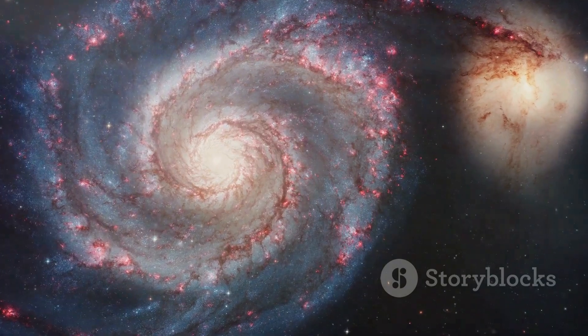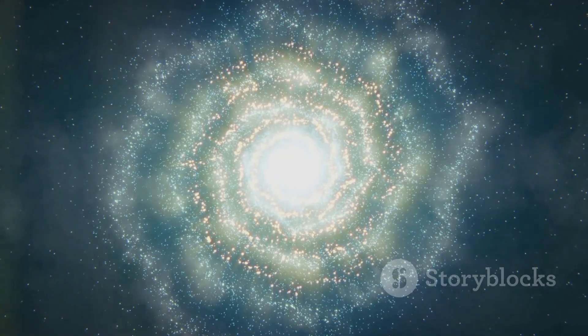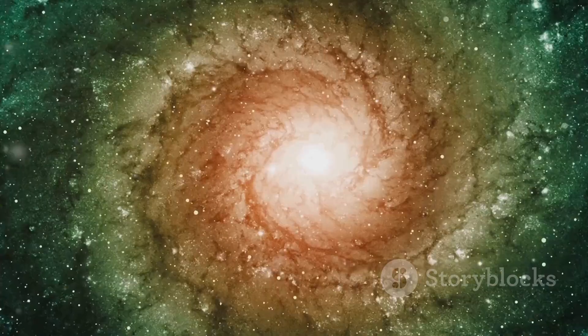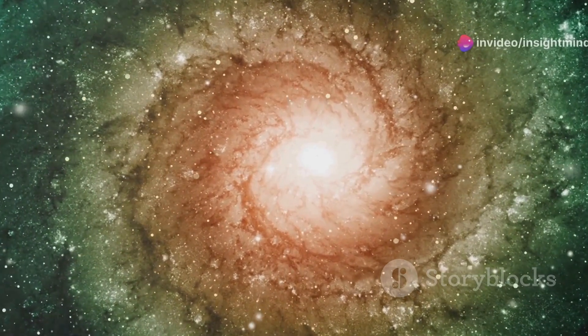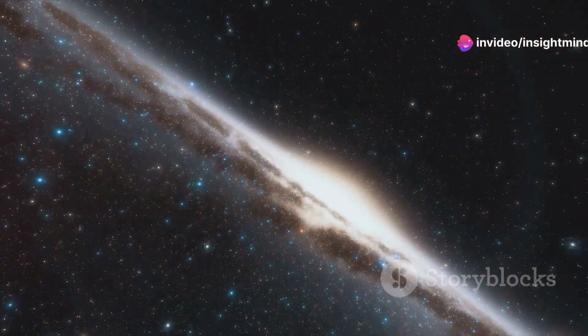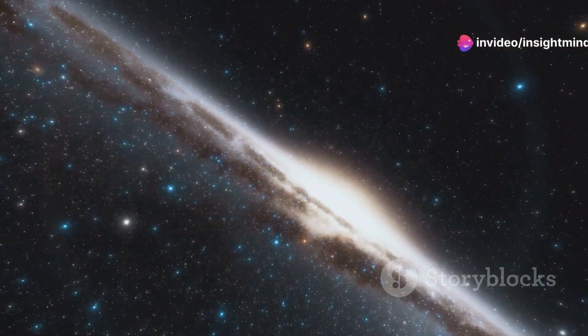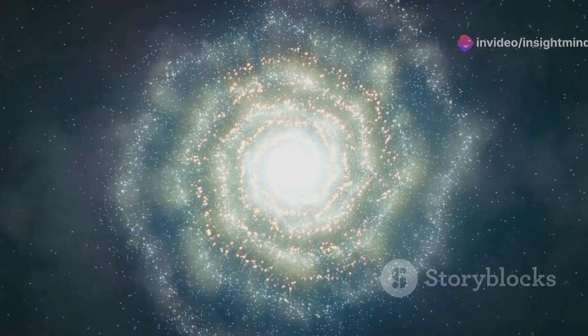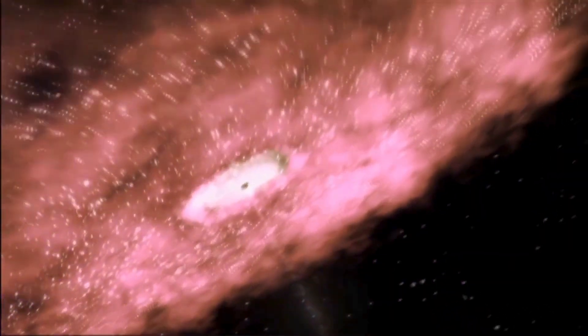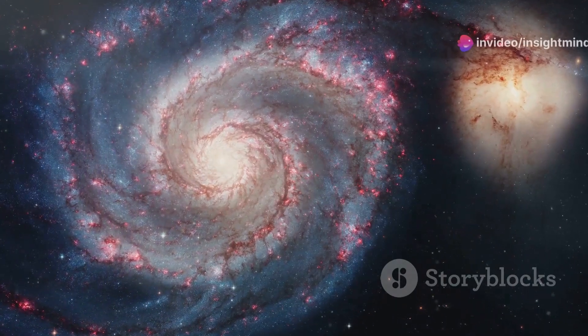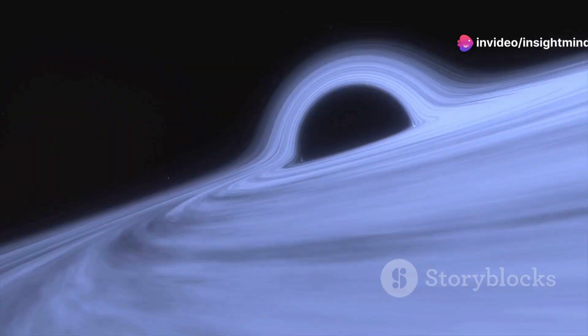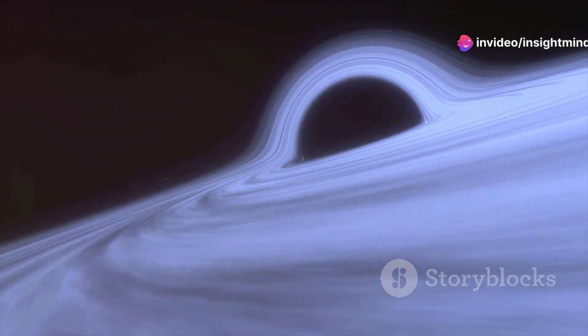At the heart of this cosmic metropolis lies Coma A, also known as NGC 4874, a giant elliptical galaxy that reigns supreme over its galactic neighbors. Coma A is a true behemoth, containing an estimated trillion stars and a supermassive black hole at its core. It continues to grow by cannibalizing smaller galaxies that venture too close to its gravitational grasp.